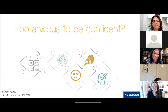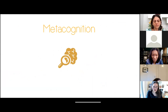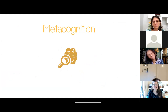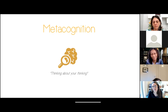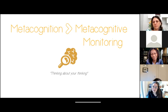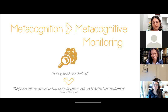The title of my talk is: 'Are children too anxious to be confident?' I will walk through my research on the interplay between math anxiety on the one hand and metacognition on the other. Metacognition is often broadly defined as 'thinking about your thinking,' and is a very broad concept encompassing many different aspects. We specifically focused on metacognitive monitoring, defined as the subjective self-assessment of how well a cognitive task will be, is, or has been performed.